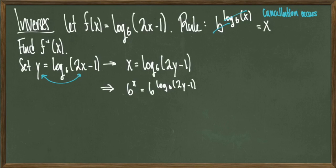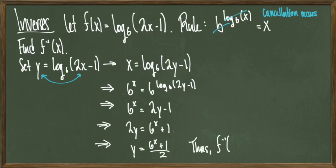And now given the rule I have at the top of the page, the right-hand side simplifies to 2y - 1. Now all I need to do is solve for y. Running through the steps, I end up with y = (6^x + 1) / 2, therefore f inverse of x = (1/2)(6^x + 1), and we're done. Since I started with a logarithmic function and found its inverse, I ended up with an exponential function. If I started with an exponential function and found its inverse, I'd end up with a logarithmic function.